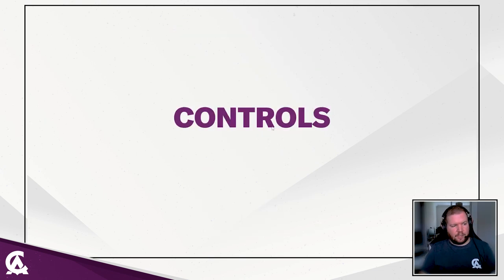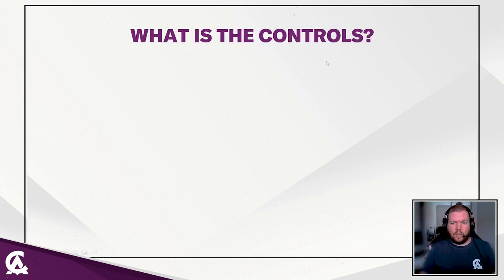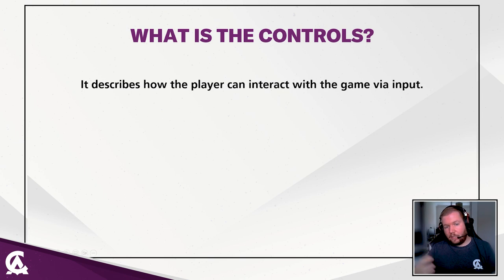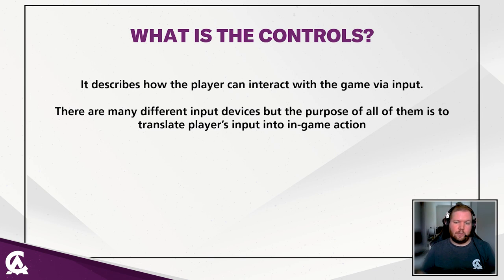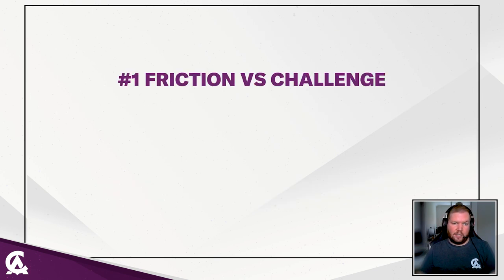That brings us to our final point of the three C's: controls. Controls describe how the player can interact with the game with inputs. There are many different types of input devices — from mouse and keyboard to touchscreen to gamepad — but the purpose of all of them is to translate player input into in-game action.